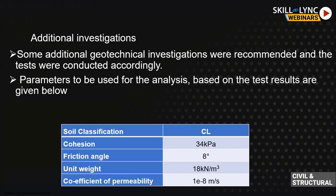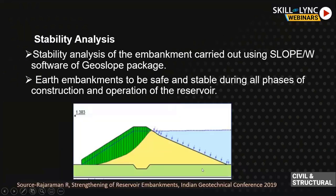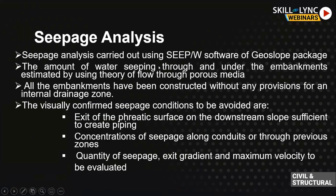Based on investigations, we selected the following parameters: cohesion of 34 kPa, friction angle of 8 degrees, and coefficient of permeability of 1×10⁻⁸ m/s. We then simulated the slope before breaching using Slope/W software from the GeoSlope package. Various phases of construction and operation were simulated. GeoSlope also has an additional software module called Seep/W.